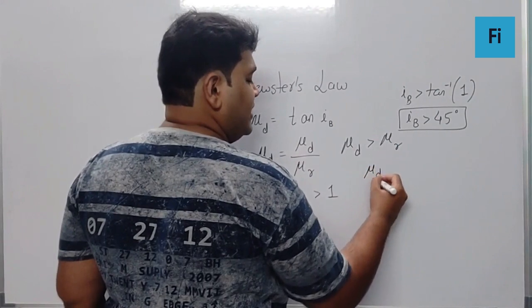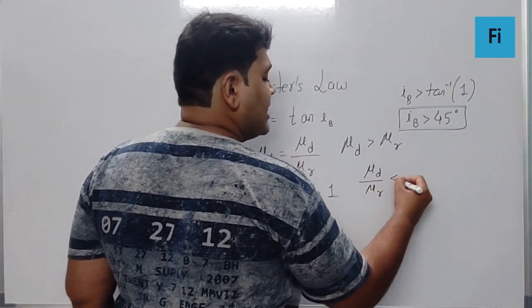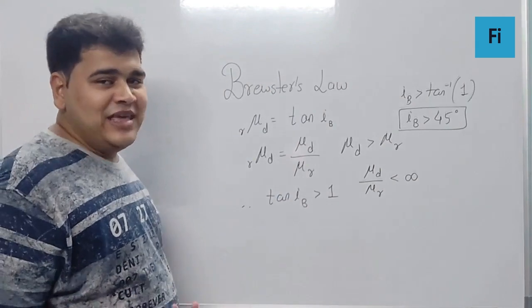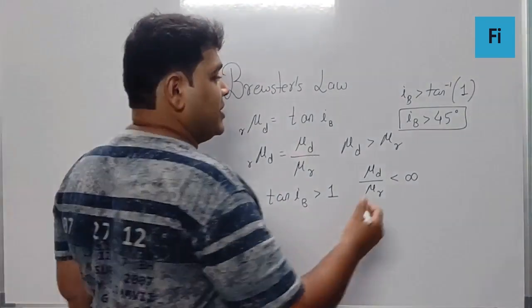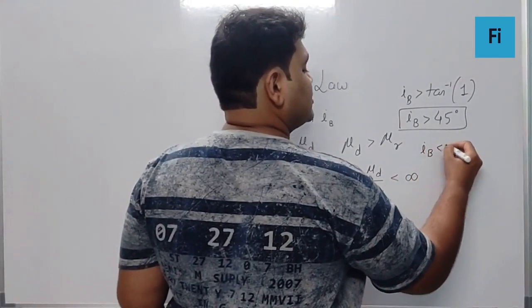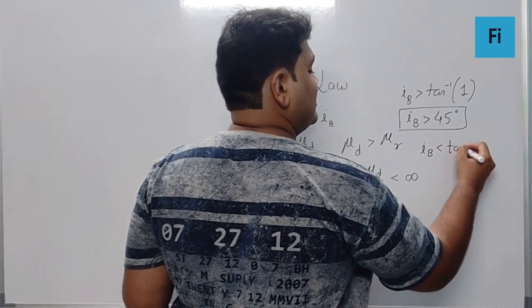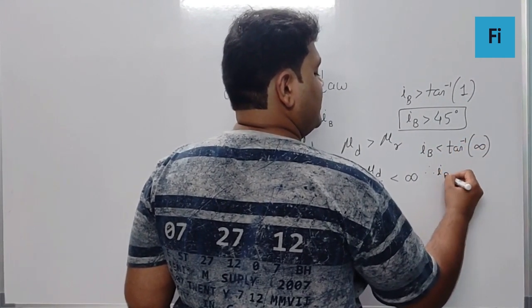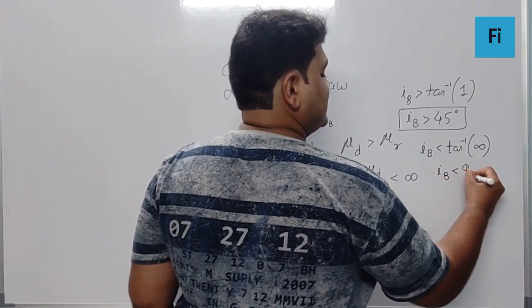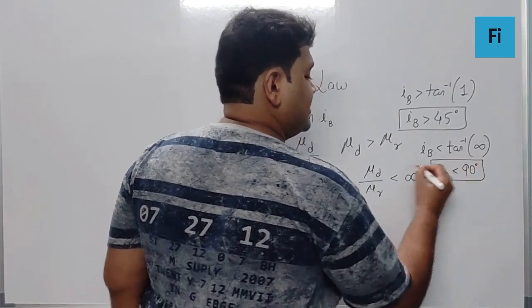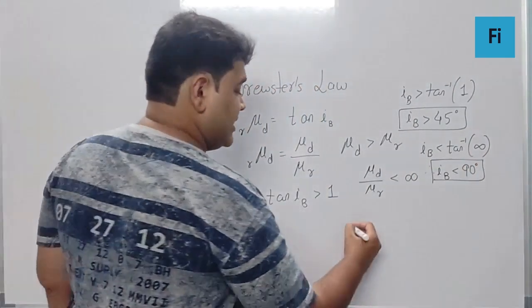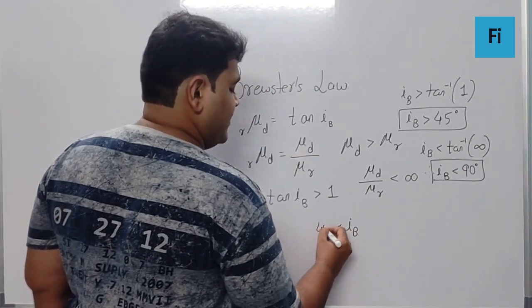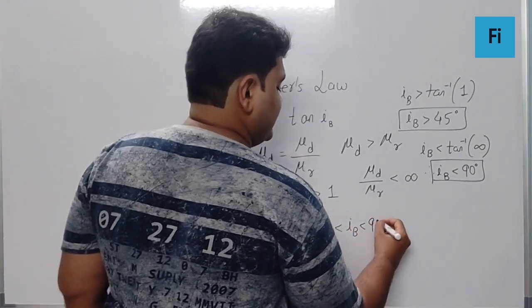Which means IB has to be greater than 45 degrees. Now we know that this ratio, mu of D by mu of R, can always be less than infinity — it cannot be equal to infinity — and that means IB has to be less than tan inverse of infinity, which means IB has to be less than 90 degrees.